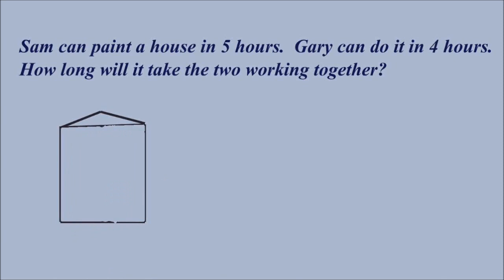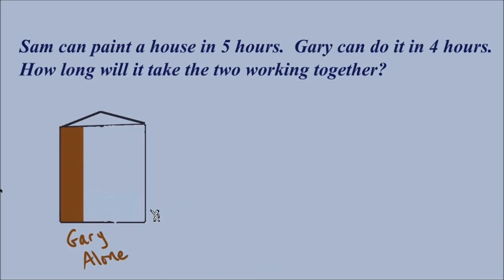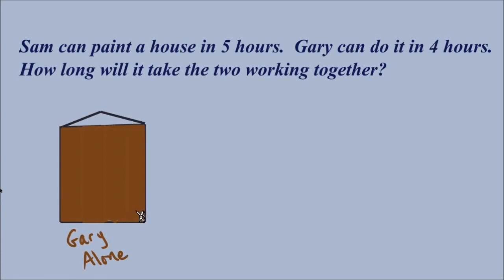Now let's break down how we actually solve this problem. Consider what happens when Gary works alone, going hour by hour. If Gary takes four hours to paint the entire house, how much will be painted after just one hour? If it takes four hours to do the entire house, then in one hour only one-fourth will be painted. After two hours, two-fourths or one-half. After three hours, three-fourths. After four hours, the entire house is painted.